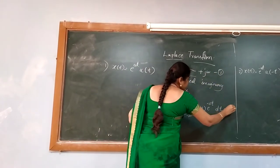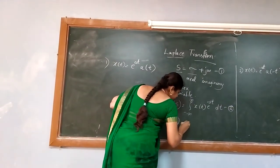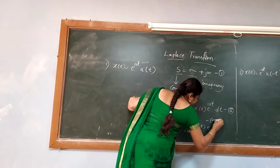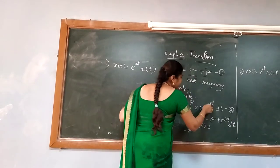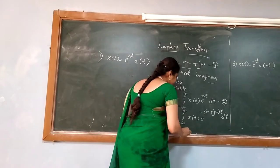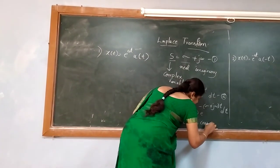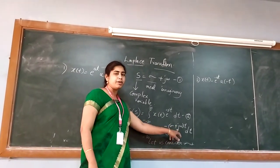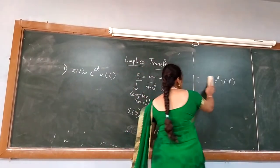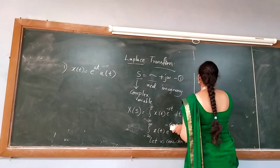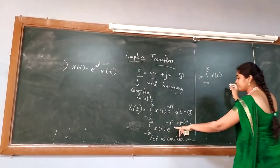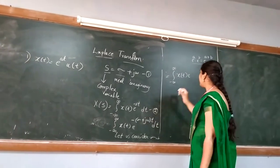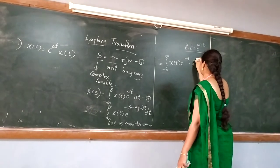I am substituting S = σ + jΩ into the Laplace transform equation. Where S appears, I have substituted σ + jΩ. Now the exponent is in the format of e^(A+B). Whenever you come across an equation like e^(A+B), you have to split it: the integral from minus infinity to infinity of x(t)·e^(−σt)·e^(−jΩt) dt.